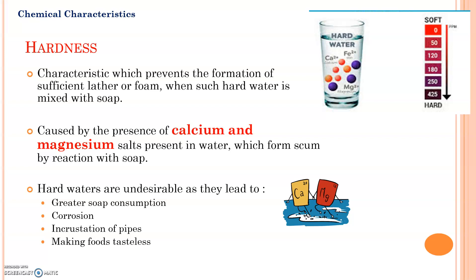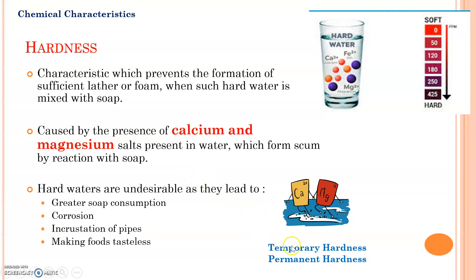Based on the presence of carbonates and bicarbonates along with calcium and magnesium salts, we classify hardness into two types: temporary hardness and permanent hardness. Temporary hardness is due to the carbonates and bicarbonates of calcium and magnesium, and permanent hardness is due to the presence of sulfates, chlorides, or nitrates of calcium and magnesium. That is why temporary hardness is known as carbonate hardness and permanent hardness is known as non-carbonate hardness.